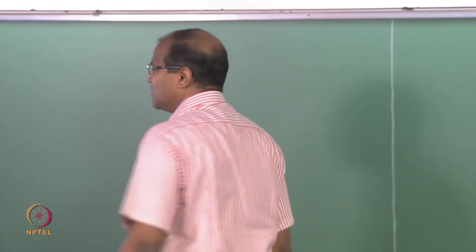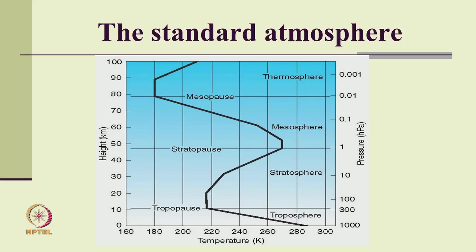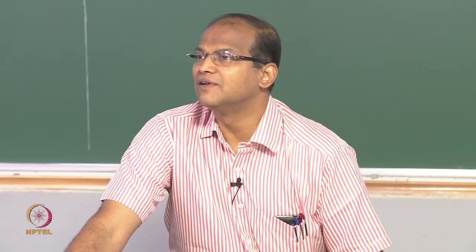The lowest 10 kilometers is the troposphere, and the line of demarcation between troposphere and stratosphere is the tropopause. At the tropopause, temperature becomes invariant with respect to height. Then it increases, and this gradient slightly changes because of the concentration of various gases. Then we hit the mesosphere where there is a stratopause, followed by decreasing temperature, and then the mesopause where temperature is again invariant before increasing due to higher radiation, photo-ionization, and photo-dissociation.